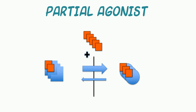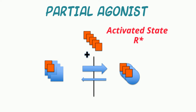Let's now turn to what we call a partial agonist. The simplest way to think about it is that this kind of agonist's maximal effect is less — that is, partial — than that of a pure agonist. Turning to receptor theory again, a partial agonist, while favoring R star, does not shift the conformational equilibrium toward R star as effectively as a pure agonist. So even at maximal effect, the effect is less than the maximal effect for a full agonist.